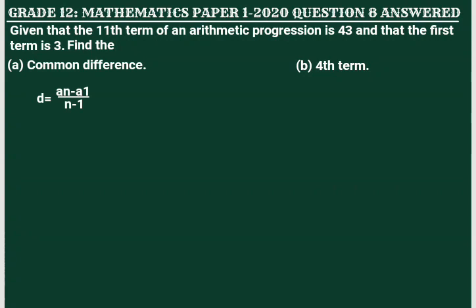In the formula, d is the common difference. aₙ is the number given at a certain position in the sequence, and a₁ is the first number in the sequence. The n in the denominator is the position of the number given in the sequence.